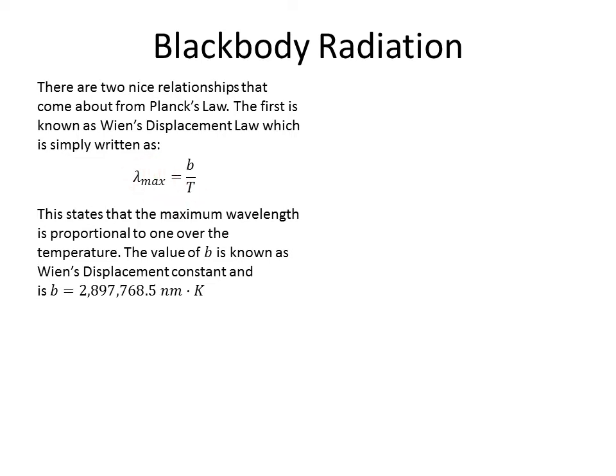One thing we did mention, in Planck's Law, the spectral radiance has units that are kind of interesting. The spectral radiance units are the power divided by the area, the area of the emitter, divided by the solid angle.